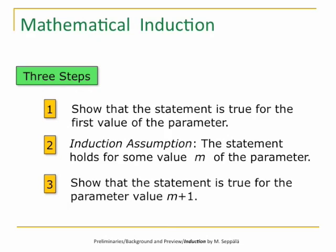If we manage to do all these steps 1, 2, and 3, then we have built a machine that proves the statement for any value of this parameter. Namely, if it is true for the first value, then by steps 2 and 3 it is true also for the second value, and if it is true for the second value, then by 2 and 3 it is true also for the third value, and so on. This is how induction works — it always has these three parts.